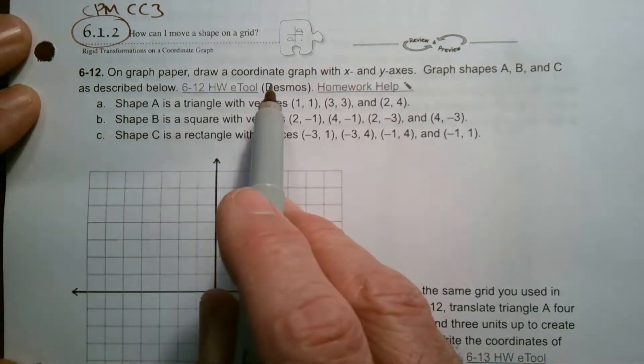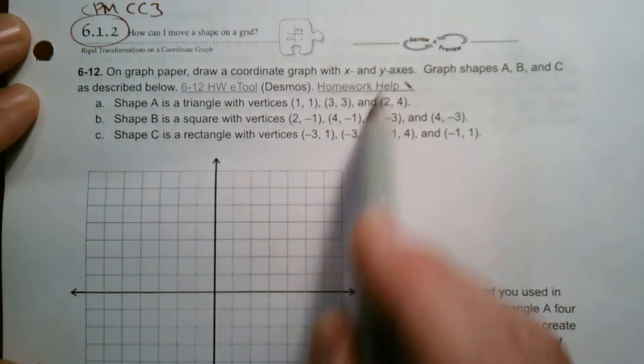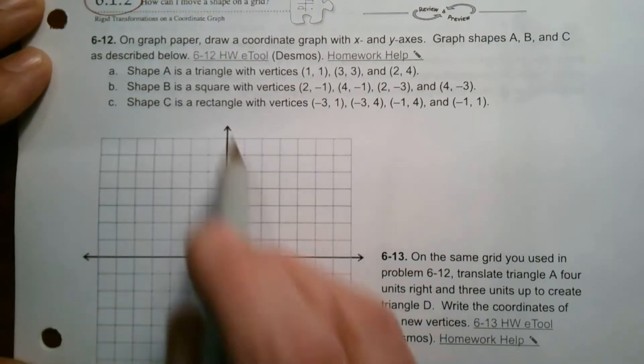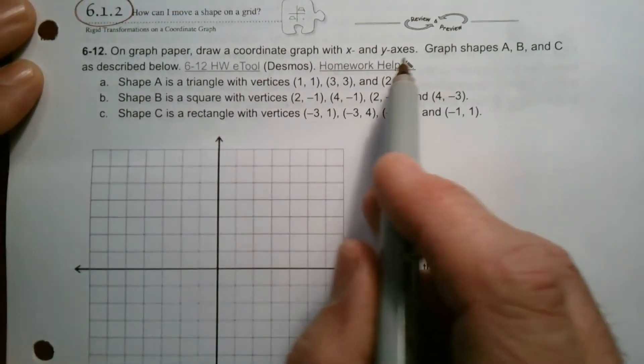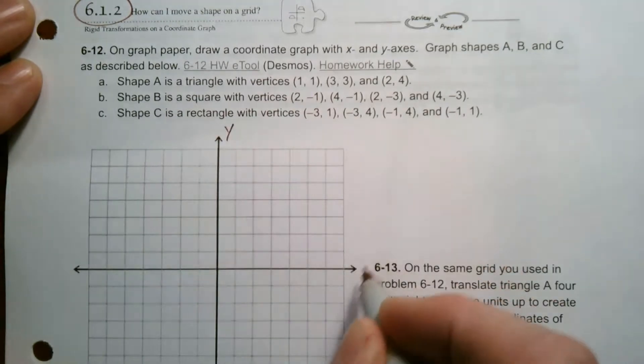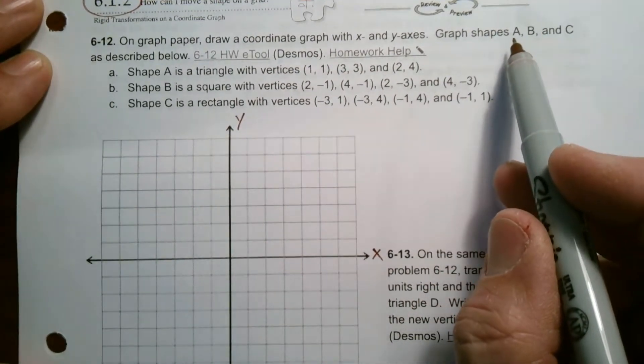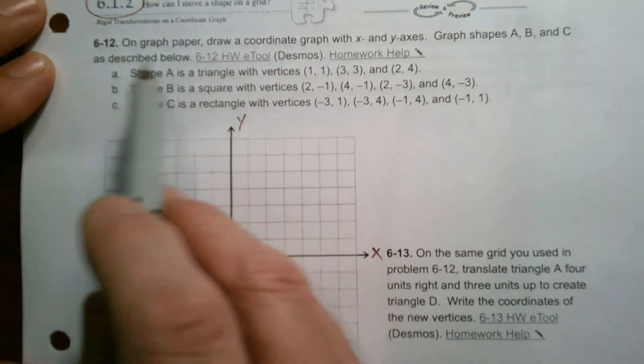On graph paper, draw a coordinate graph with x and y axes, which I already have here. So you may have to pull some graph paper out if you don't have graph paper, but I've got my graph here. So put in your x and y. This is my y axis. This is my x axis. It wants me to graph these shapes. Graph shape A, B, and C as described below.